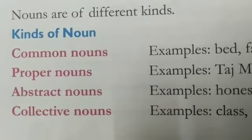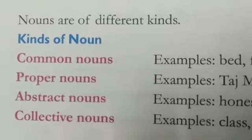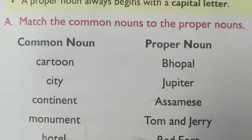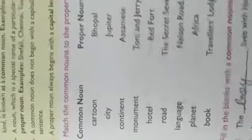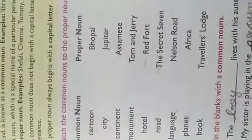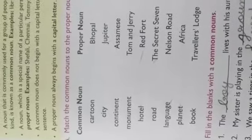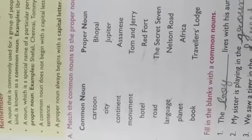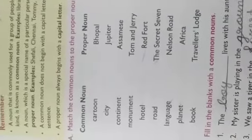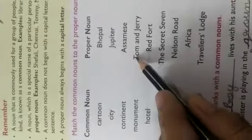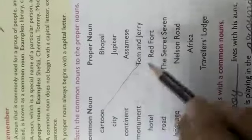आज हम अपने book की जो exercise है वो common noun और proper noun के पहले दे रखी है — मैं आपको पहले वो solve करवाती हूँ। Exercise number A देखिए — match the common noun to the proper noun। Common noun में सबसे पहले क्या दे रखा है — 'cartoon'। Cartoon आप TV पर देखते हो — कई प्रकार जैसे Tom and Jerry, शिन्चान। तो सब के नाम हैं — वो proper noun में आएंगे, लेकिन सिर्फ 'cartoon' word common noun में। तो cartoon को Tom and Jerry से मिलाएंगे। City को भोपाल से मिलाएंगे।